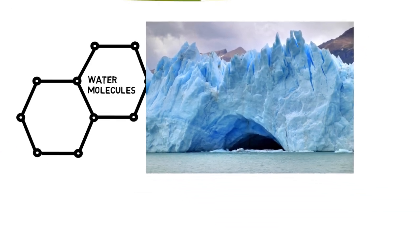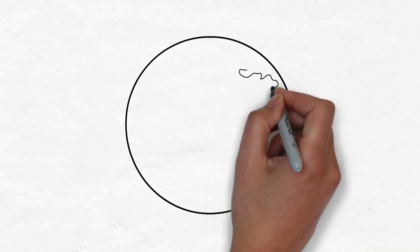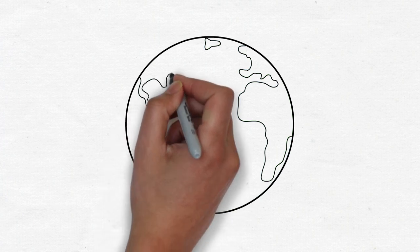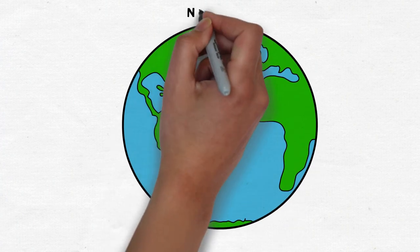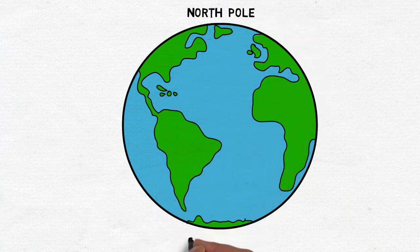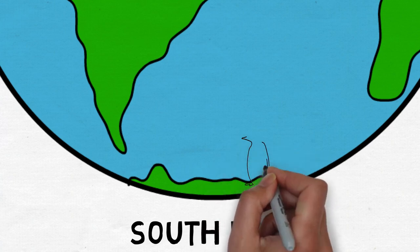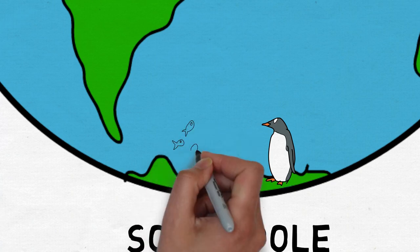Sea ice has almost no salt in it. In fact, if you melt it you can drink it. In places that get super cold, like around the north and south poles, there is a lot of sea ice at the surface especially in winter. That doesn't mean the whole ocean is frozen though. Under the ice, the ocean water is still there. Otherwise, it would be very hard for seals and fish to swim and for polar bears and penguins to dive below the icy surface to hunt them.